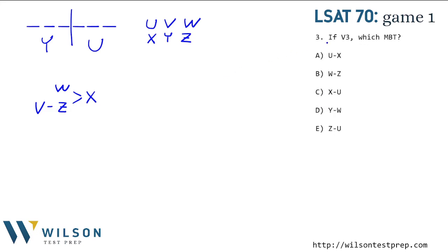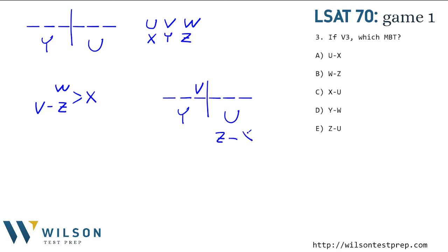Number three says: if V is in the third slot, which of the following must be true? Adding to our diagram the new hypothesis that V is third — what does this mean? Well, Z and X have to be after V, so I have to have Z and X in the last three. U also has to be in the last three. That occupies all of spots four, five, and six. So W and Y are the only things left for spots one and two.